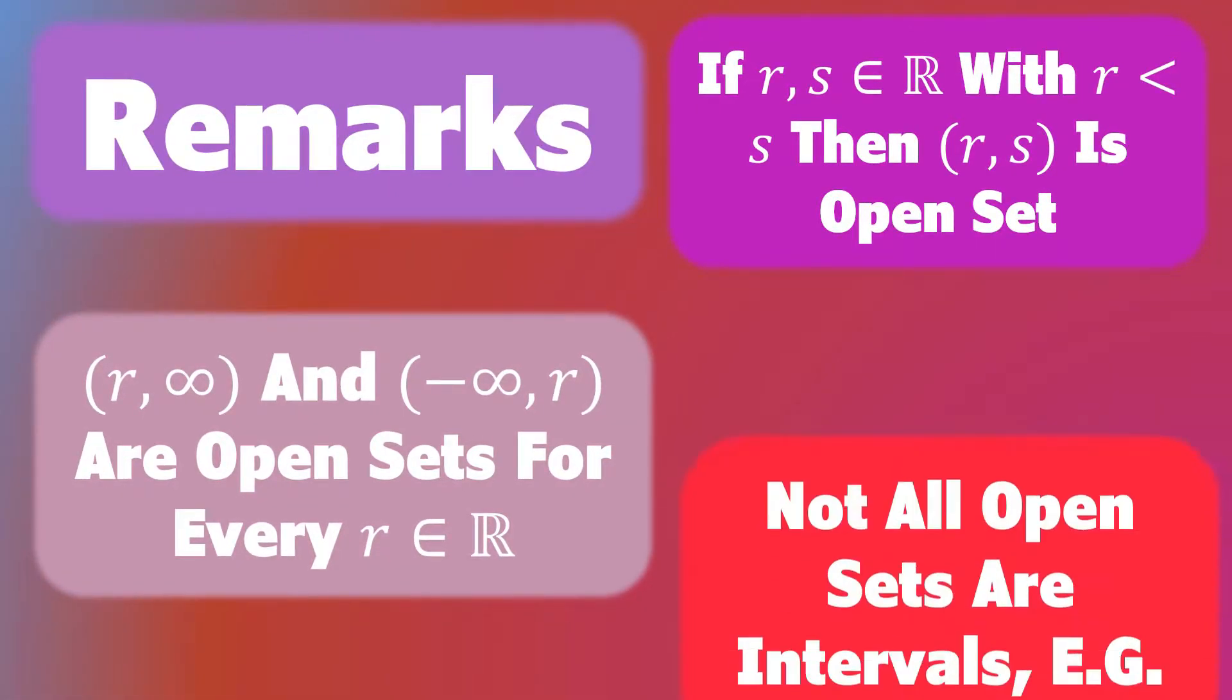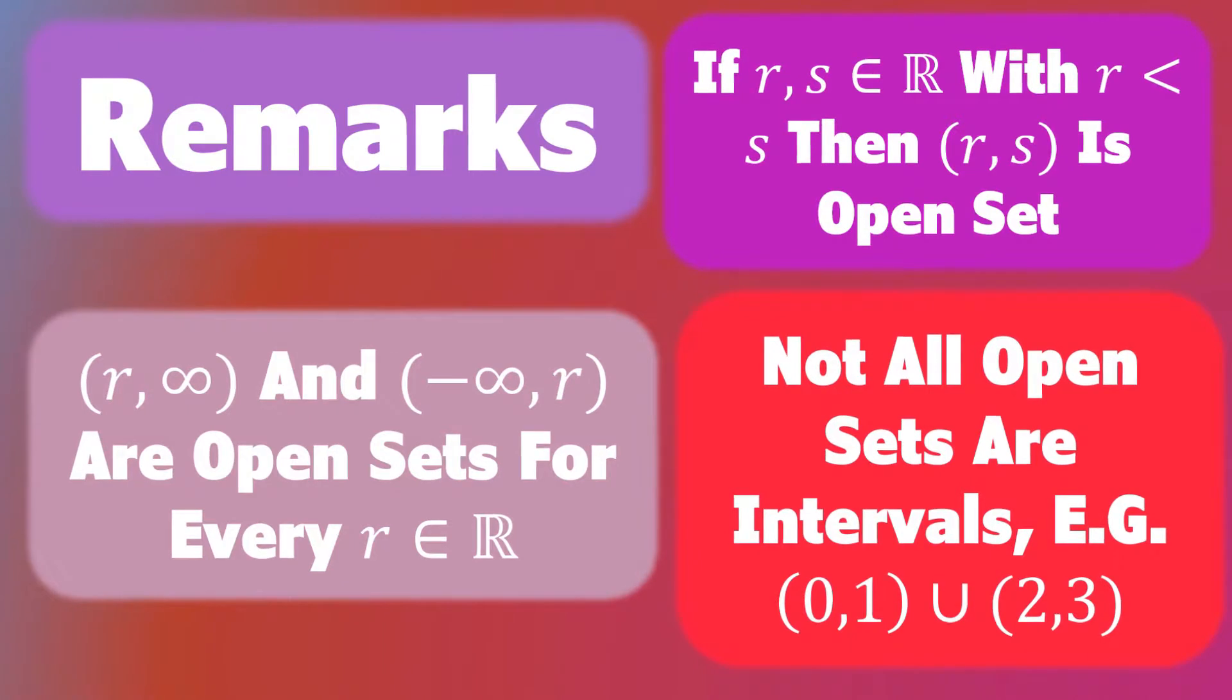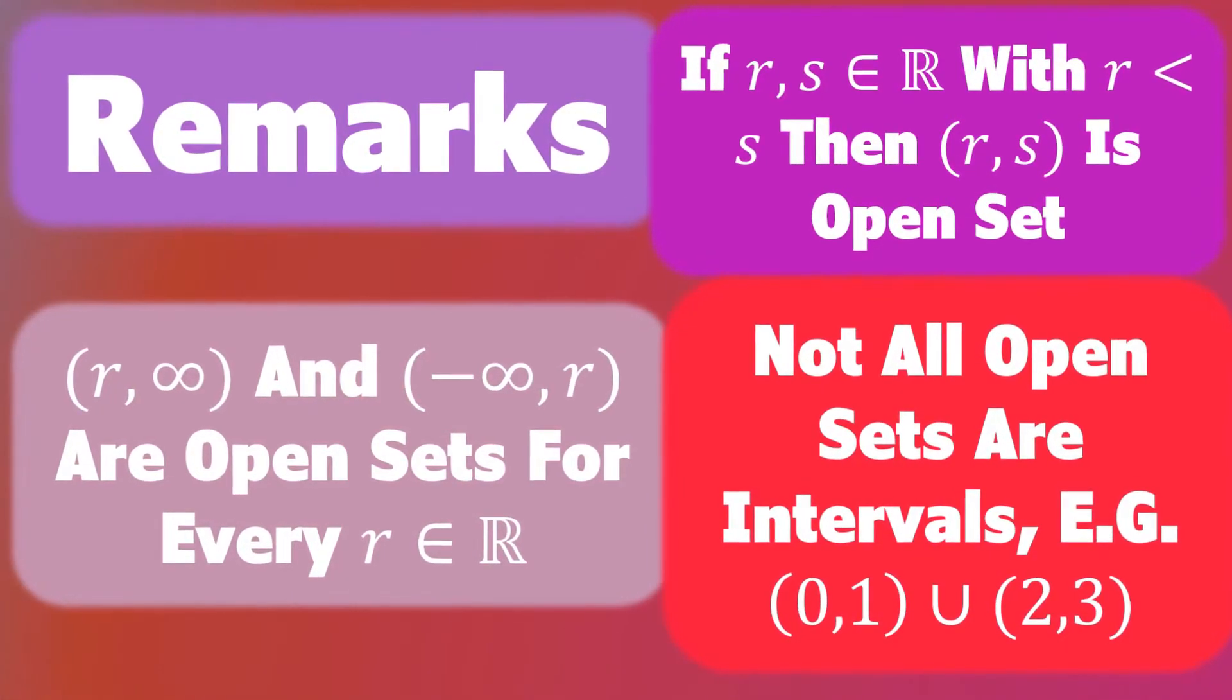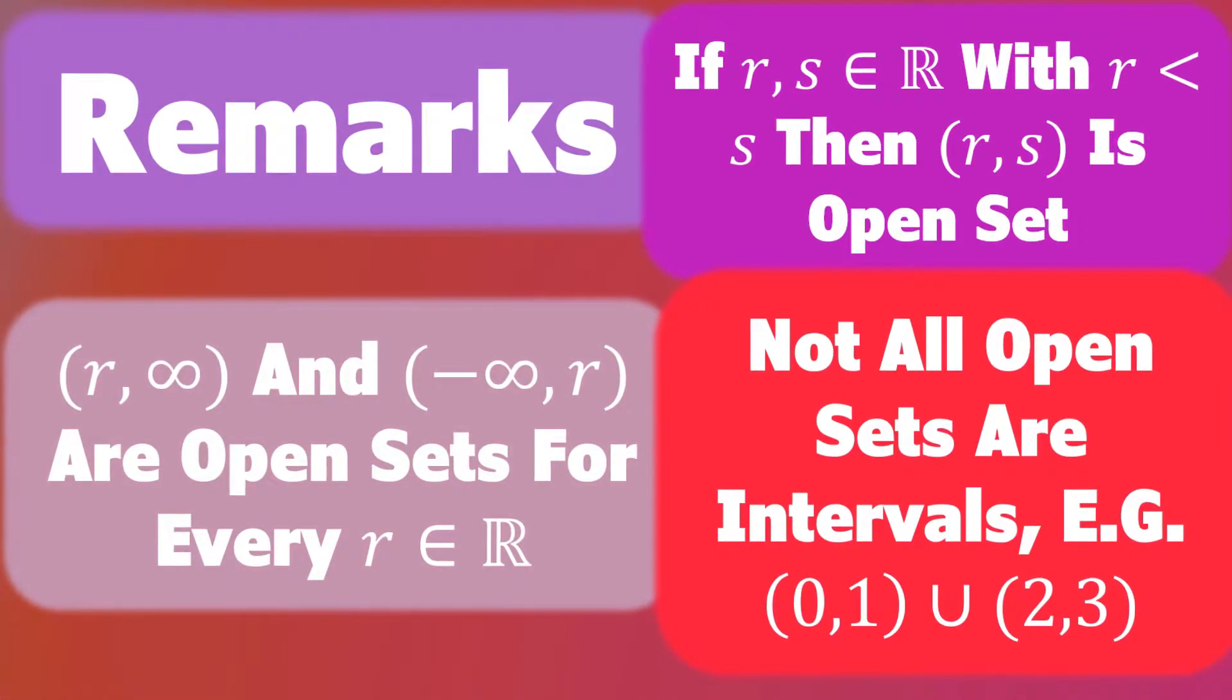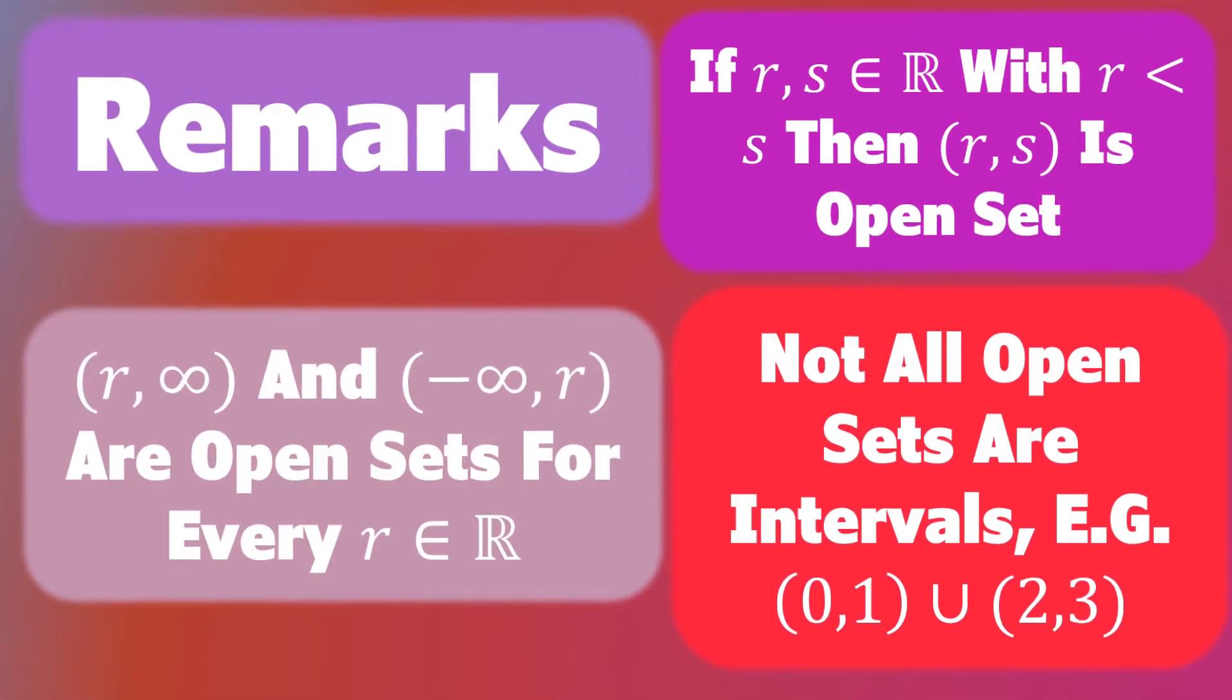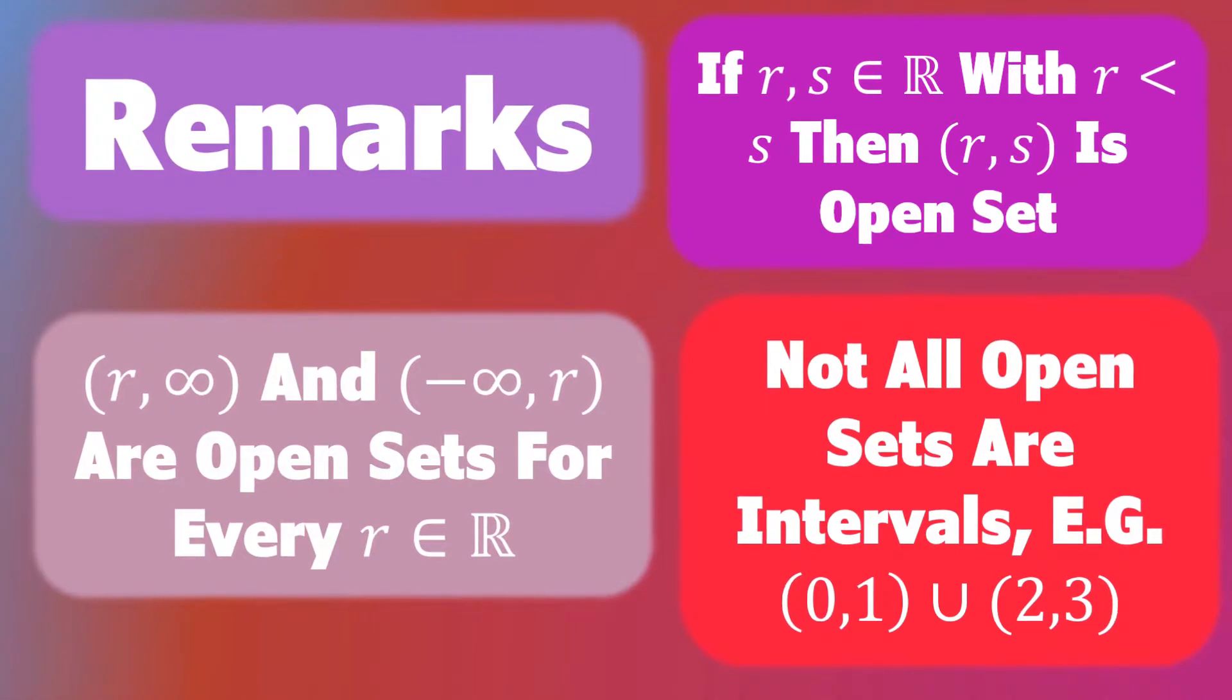However, not all open sets in the Euclidean topology are open intervals. For example, the union of the open intervals (0,1) and (2,3) is open because the union of open sets is an open set.